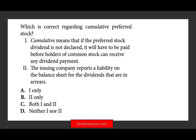This topic is covered on my website in detail. The next question: which is correct regarding cumulative preferred stock? Do you know what cumulative preferred stock is? Statement 1: cumulative means if the preferred stock dividend is not declared, it will have to be paid before holders of the common stock can receive any dividend. Yes, that is correct. Cumulative means whether it's declared or not, you still have to pay preferred stockholders before paying common stockholders.